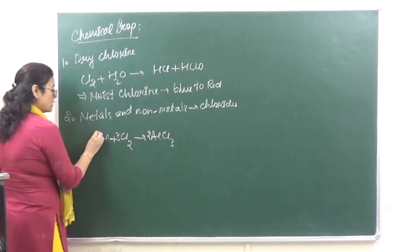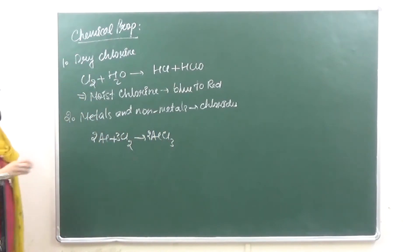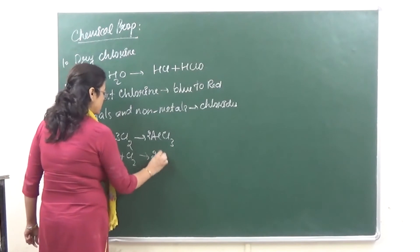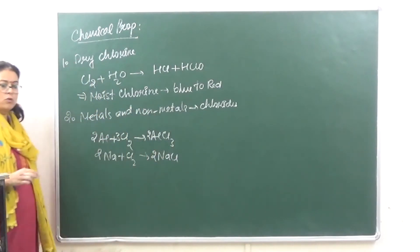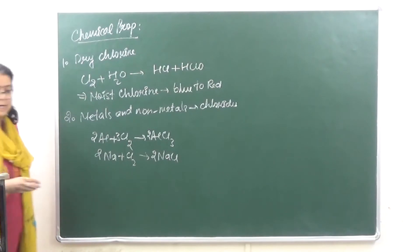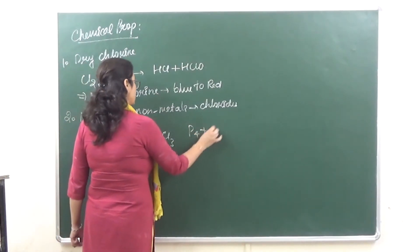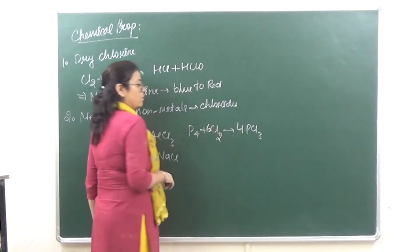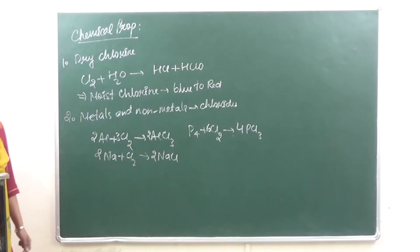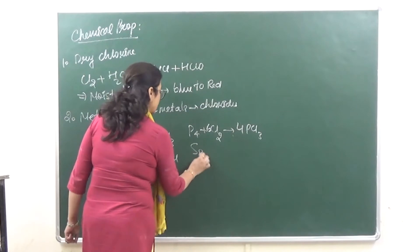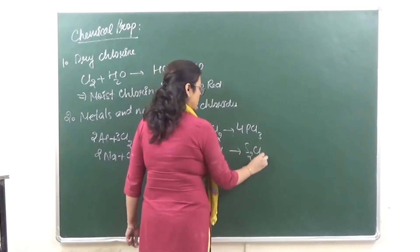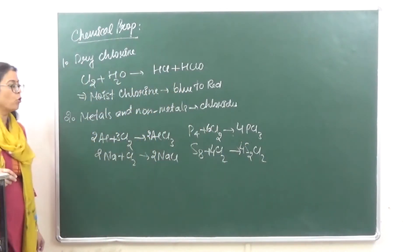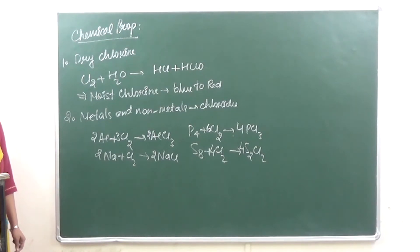The second chemical property: Chlorine reacts with a number of metals and non-metals to form respective chlorides. For example, it reacts with aluminium to give AlCl3. Similarly, it reacts with sodium to give NaCl. Non-metals: it reacts with phosphorus to give PCl3, and with sulfur to give sulfur chloride.